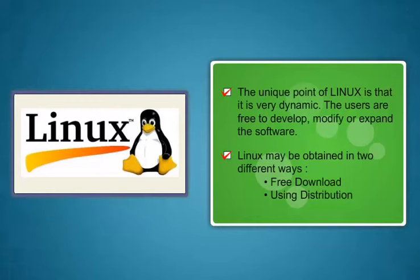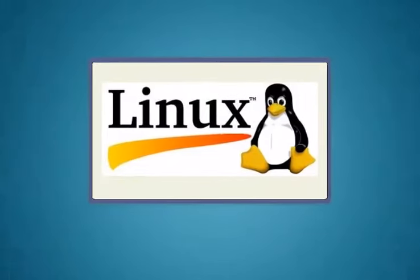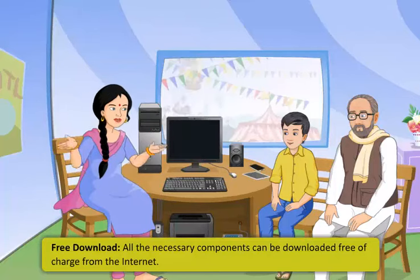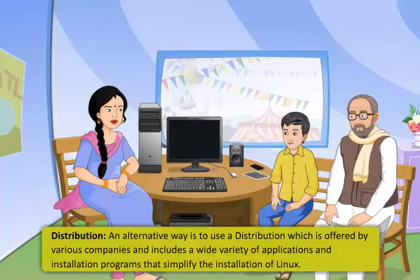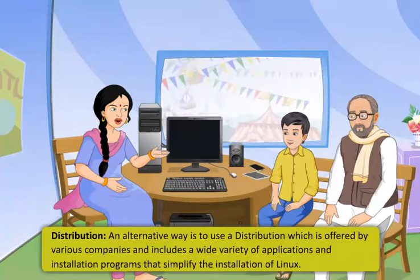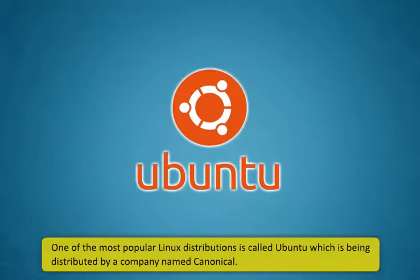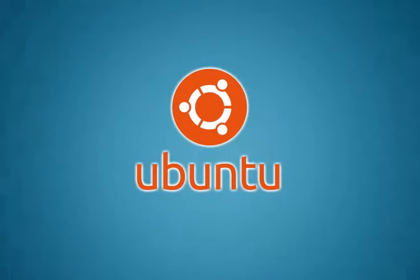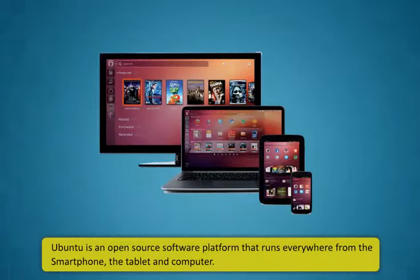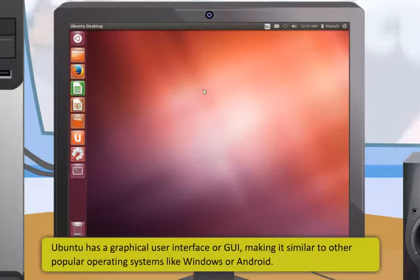Linux can be obtained in two ways: free download or using a distribution. It is successfully used by millions of users worldwide. All necessary components can be downloaded free from the internet. Alternatively, distributions offered by various companies include a wide variety of applications and installation programs that simplify Linux installation. One of the most popular distributions is Ubuntu, distributed by a company called Canonical. Ubuntu is an open source software platform that runs on smartphones, tablets, and computers.